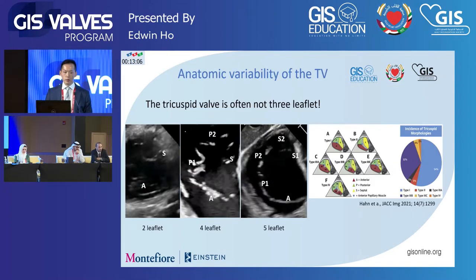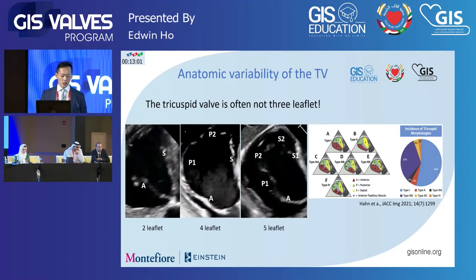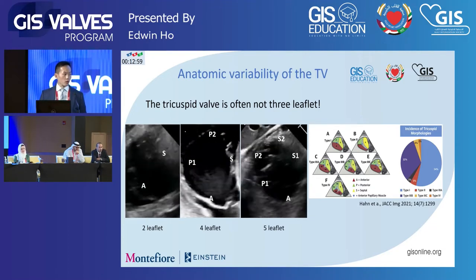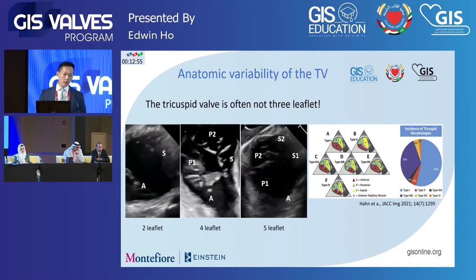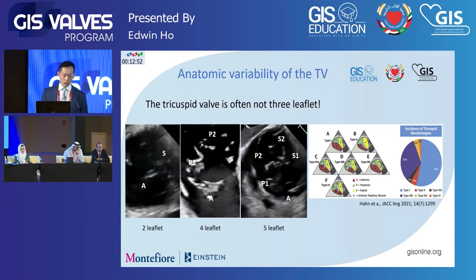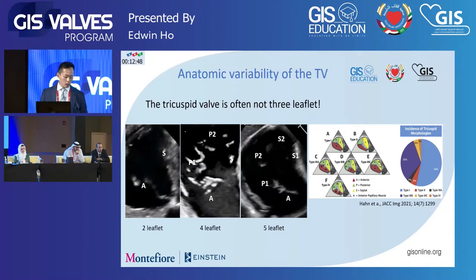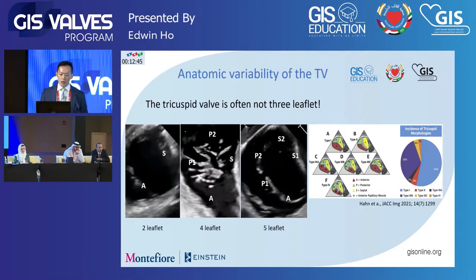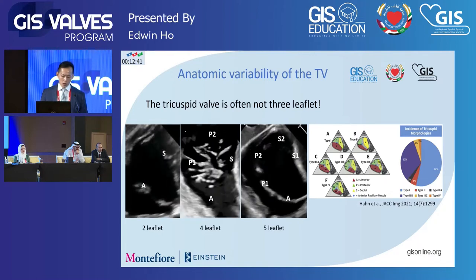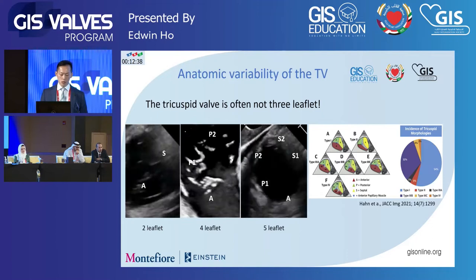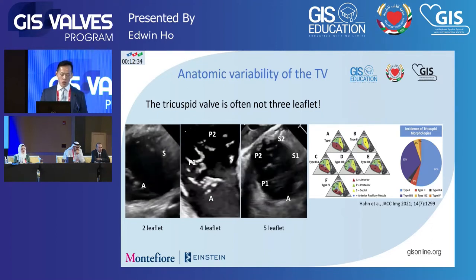A quick note about anatomic variability of the tricuspid valve. We're looking at tricuspid valves in ways we never used to as cardiologists, and the more we look at them, the more we realize they're all so different. We always think of it as a three-leaflet valve, but it's very often not actually three-leaflet. In these transgastric views, we can see two-leaflet, four-leaflet, and even five-leaflet valves. A recent publication from the highest-volume tricuspid centers found that almost 50% of treated valves were not three-leaflet.